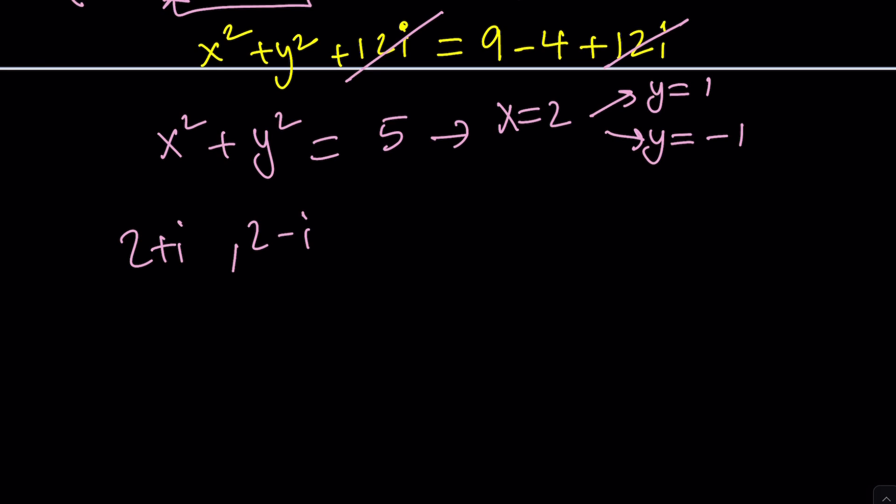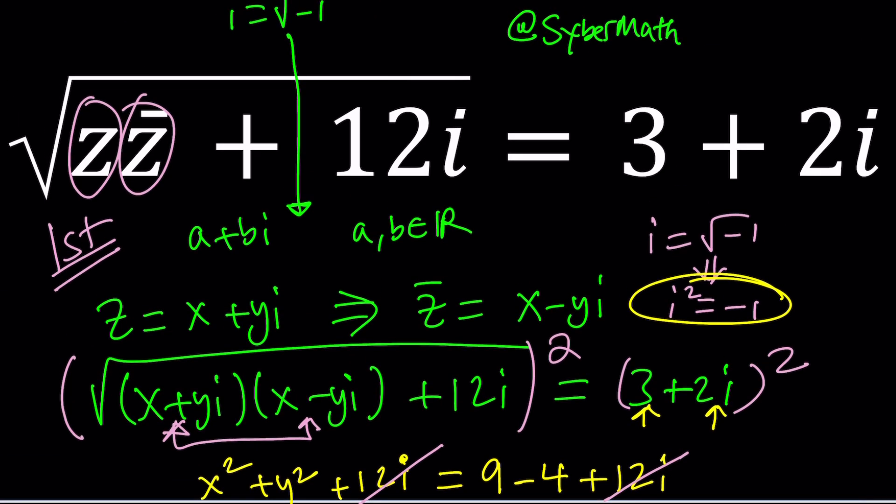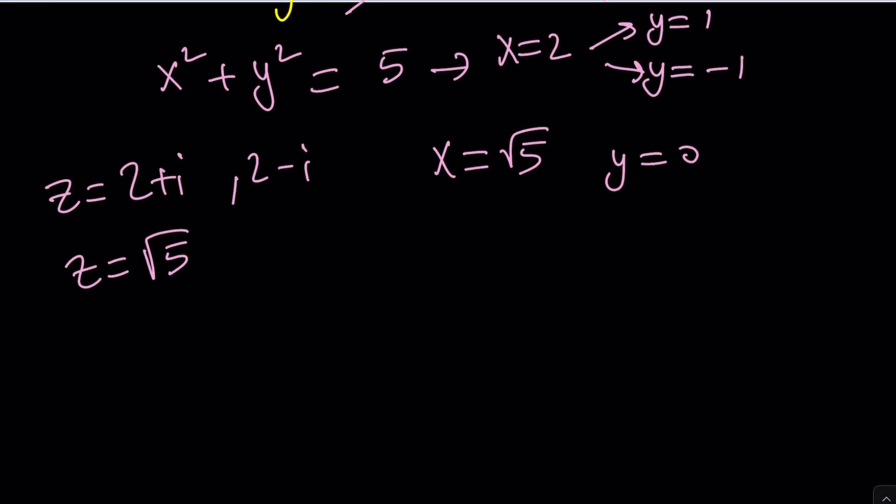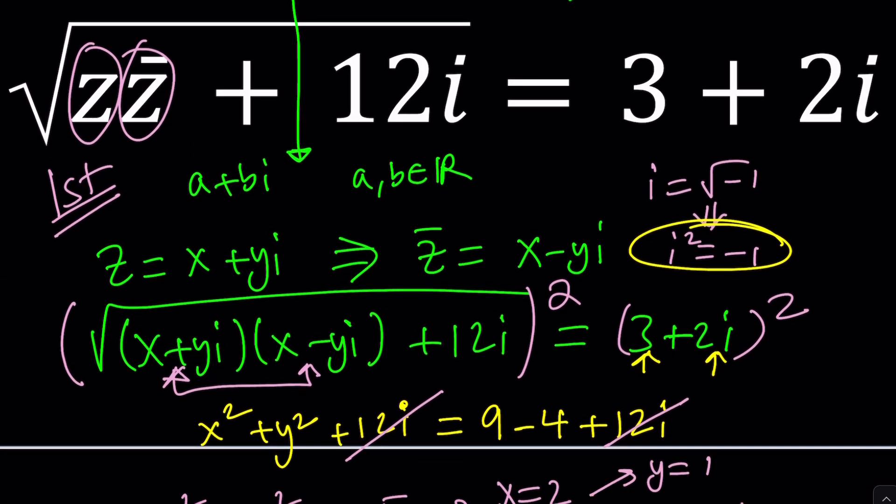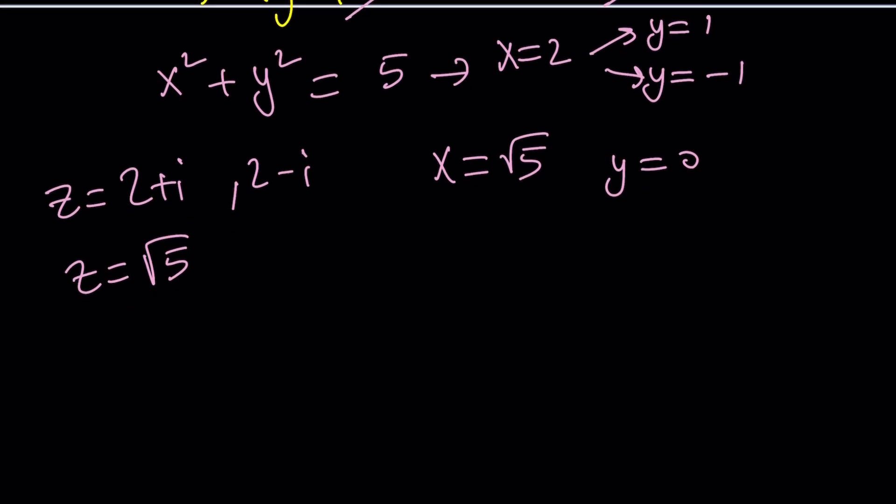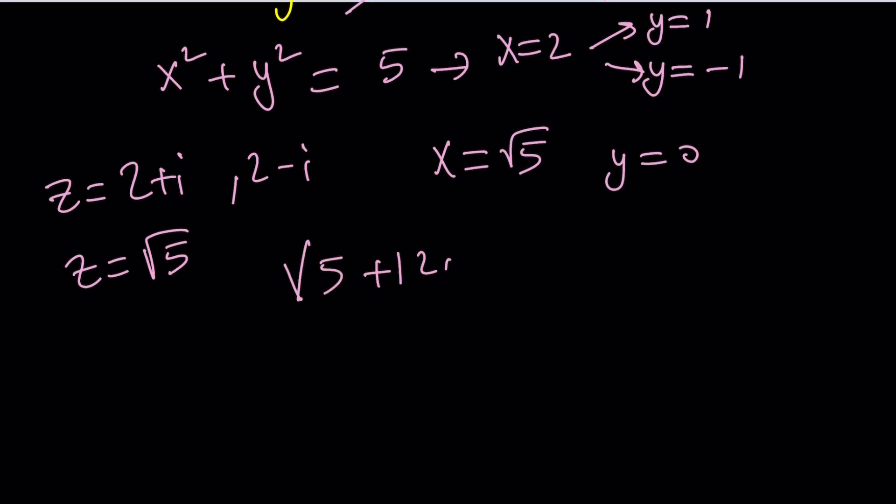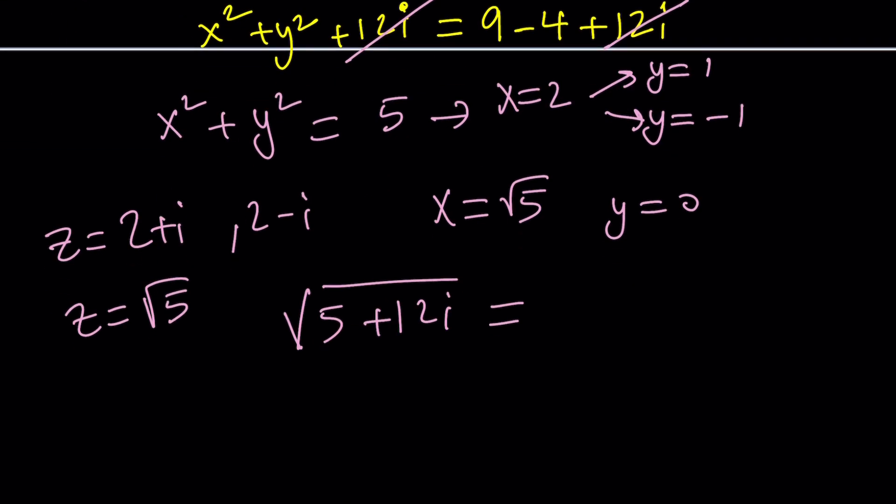So yes they come up as pairs and you can definitely find, how about x equals square root of five. Absolutely, because x squared is five, y is going to be zero and that just means z equals square root of five which is a real number and of course this equation should have real solutions too. If z is square root of five then its absolute value is square root of five and absolute value squared is five, and five plus 12i, if you take the square root of this number it'll actually give you three plus two i. But anyways there are infinitely many solutions.